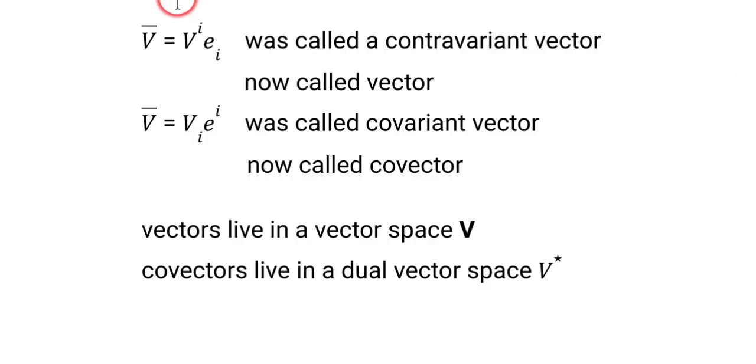In all my old books, when they had a vector defined as a linear combination of its components and its basis vectors, they just called that a contravariant vector. It's actually not a contravariant vector. It's a vector with contravariant components. But now they just call it a vector.